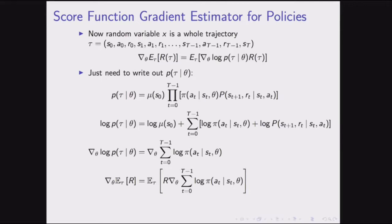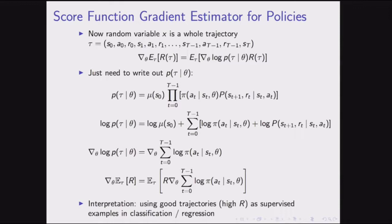Our formula for the gradient of expected reward is: the expectation over trajectories of total reward times the gradient of the sum of log-probabilities. The interpretation: take good trajectories and increase their probability in proportion to how good they are. This is similar to supervised learning, where we treat good trajectories with high rewards as positive examples — we're training the policy on which actions are good.